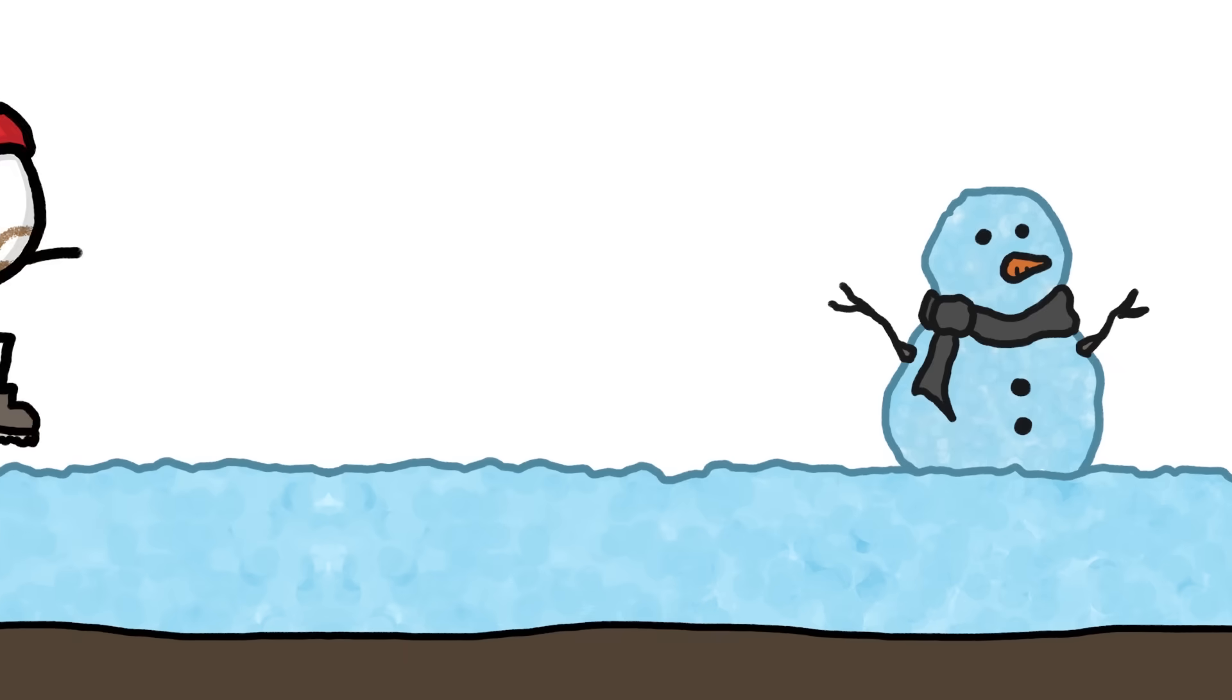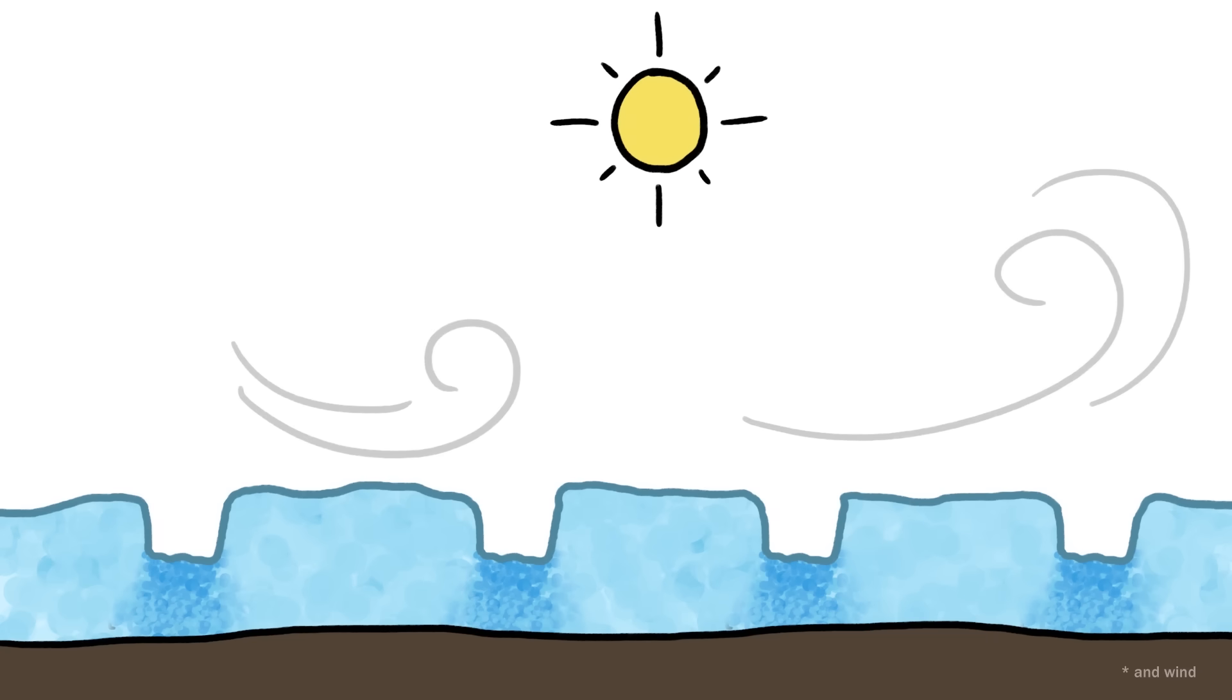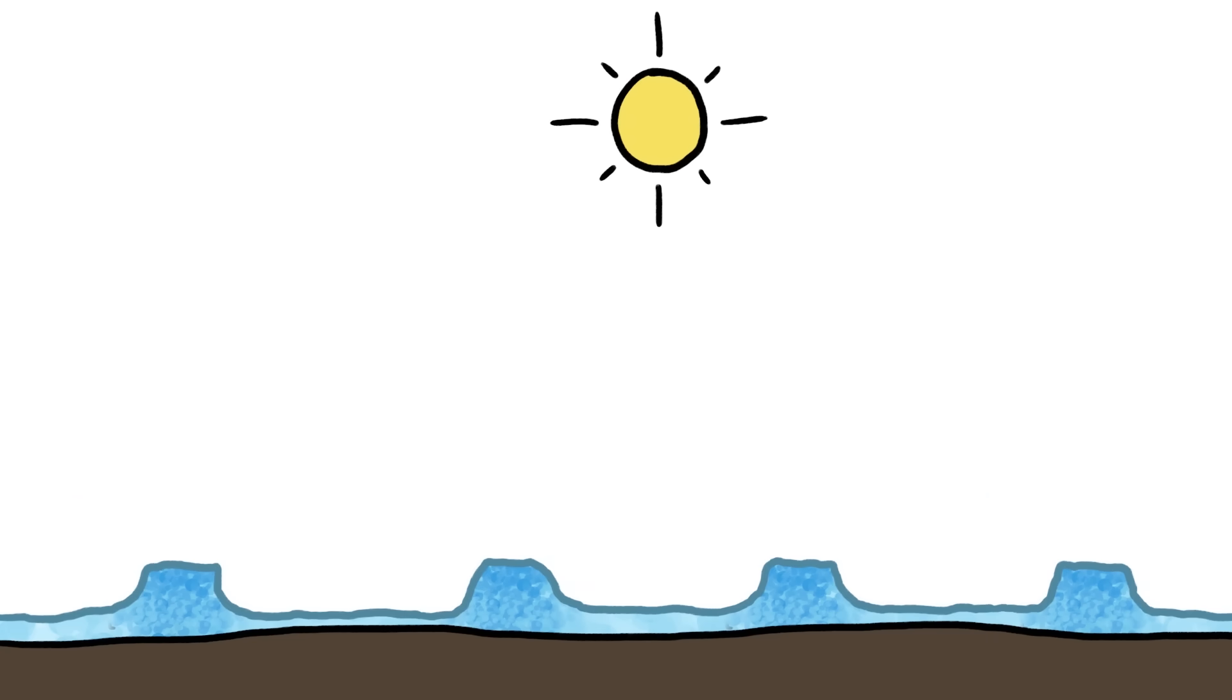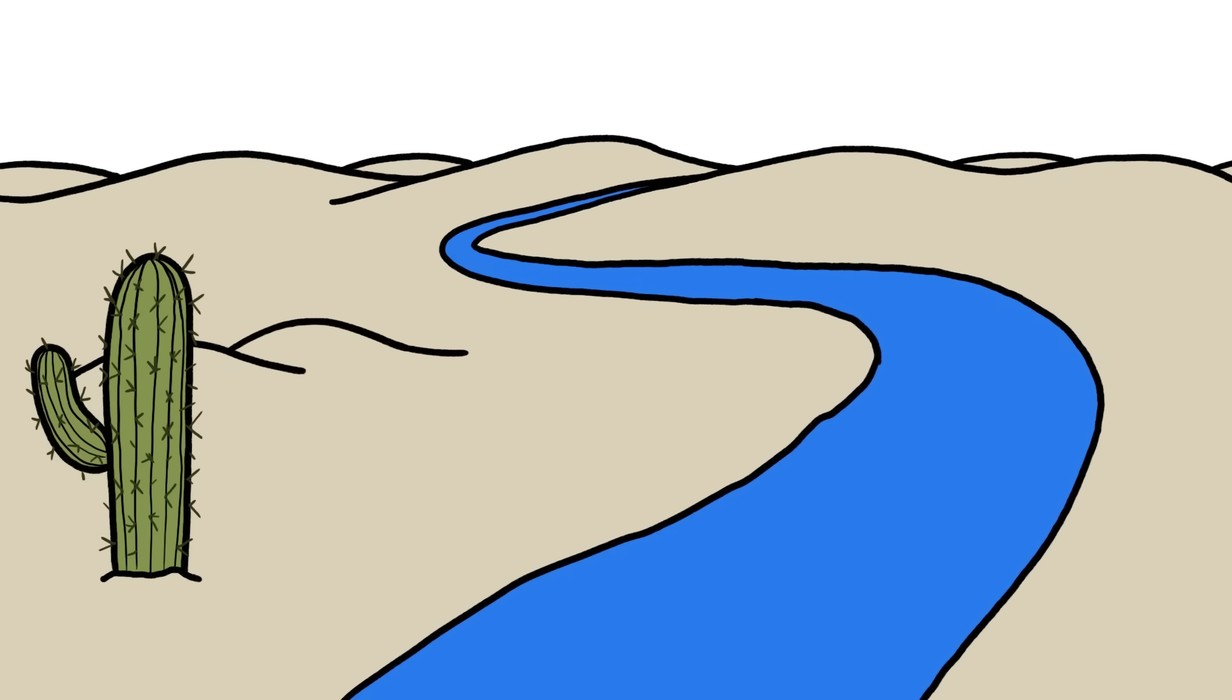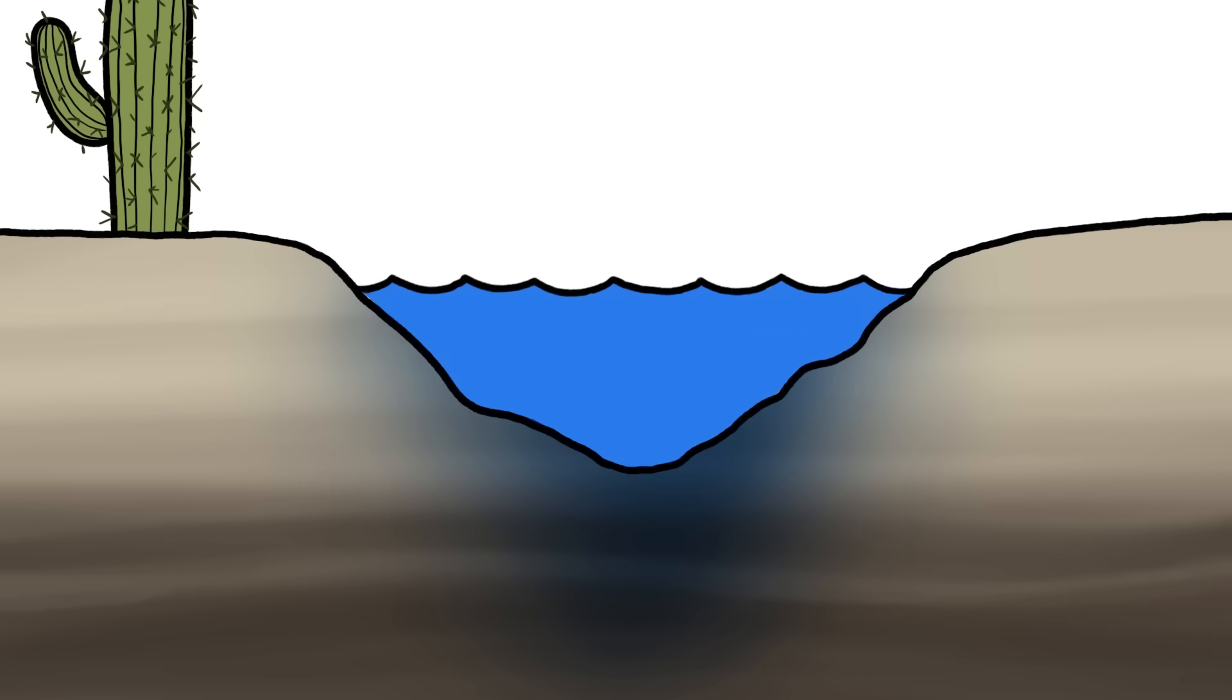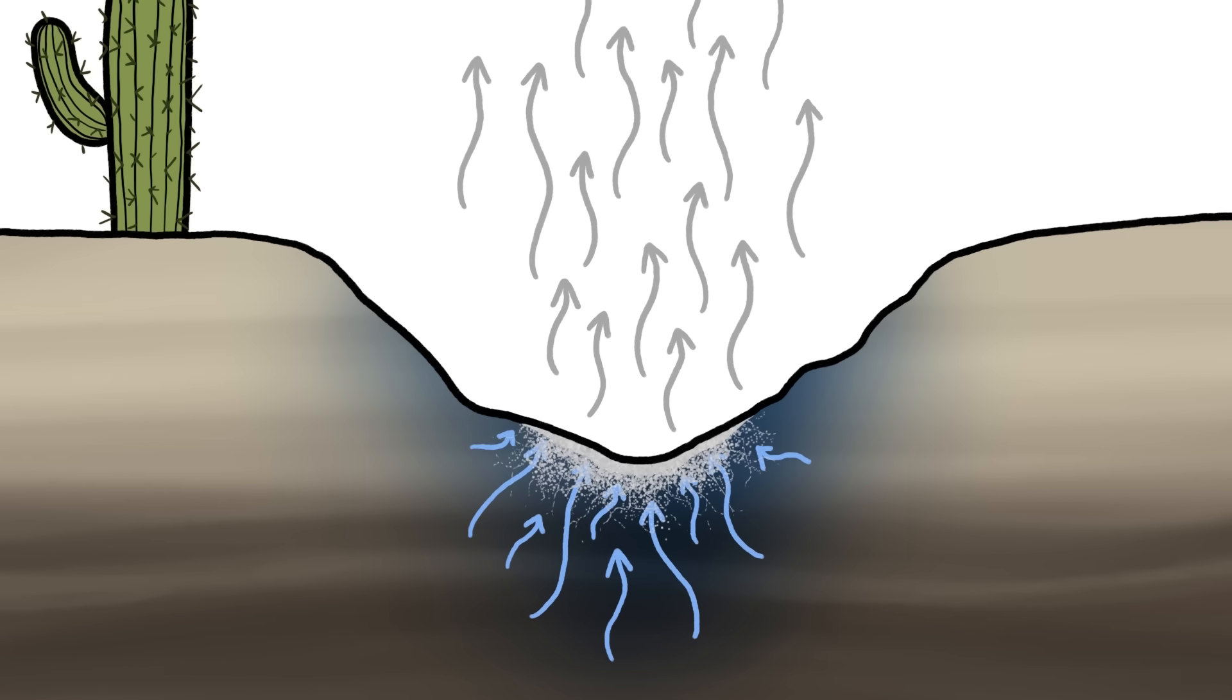If you live in a cold climate, you may have actually seen something like this happen with compacted footprints in the snow. As the sun melts the fluffier snow around them, they can end up sticking out, like this. The same thing can happen to a river valley. For instance, say you've got a stream running through a desert. Sometimes there's so little rain that the stream dries up. As it does, some groundwater is actually drawn upward by capillary action, and as it rises and evaporates, dissolved minerals in it are left behind and precipitate out, coating the sediments in the riverbed and cementing them together.